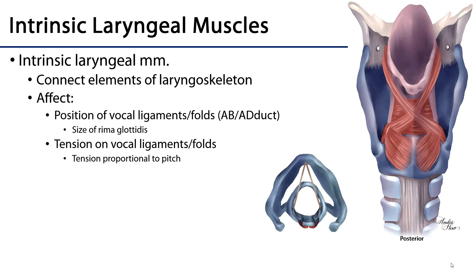The intrinsic laryngeal muscles connect elements of the laryngoskeleton to other elements of the laryngoskeleton. We can contrast them with extrinsic laryngeal muscles, which connect outside structures to the larynx. For instance, the longitudinal muscles discussed in the context of the pharynx are examples of extrinsic laryngeal muscles.